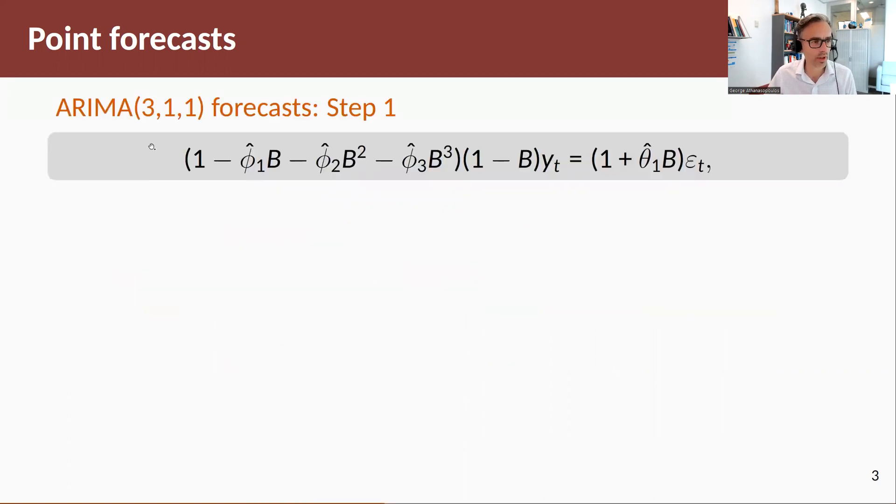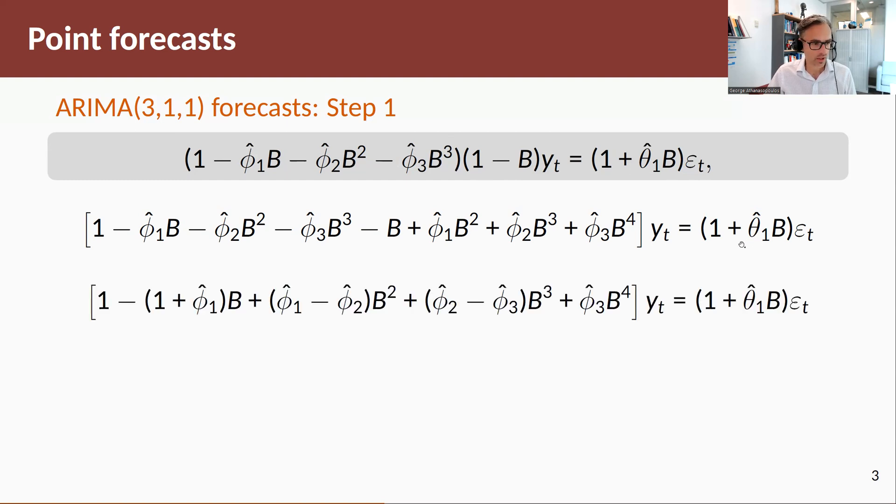So let's have a look at an example. We have an ARIMA(3,1,1) and we want to forecast from this model. So here's our estimated model in backshift operator notation. This is the beauty of backshift operator notation: you can quickly write down the model. Well, let's expand these polynomials here and do some collection of terms and a little bit of rearrangement.